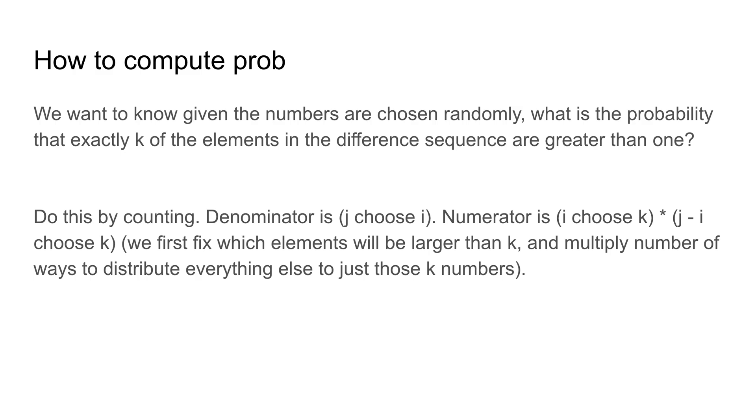Now I'll go over how to compute the probability. Again, we can restate the problem. We want to know that given the numbers are chosen randomly, what's the probability that exactly k of the elements in the difference sequence are strictly greater than one.